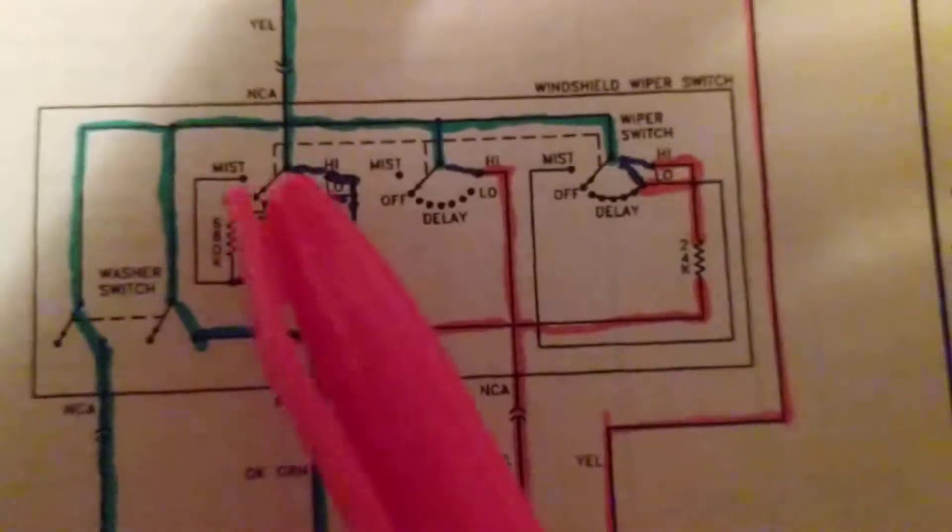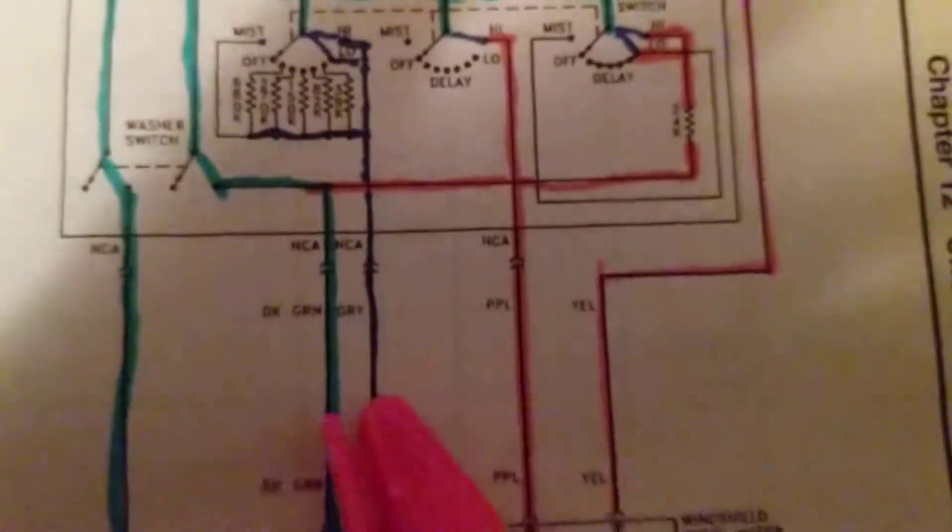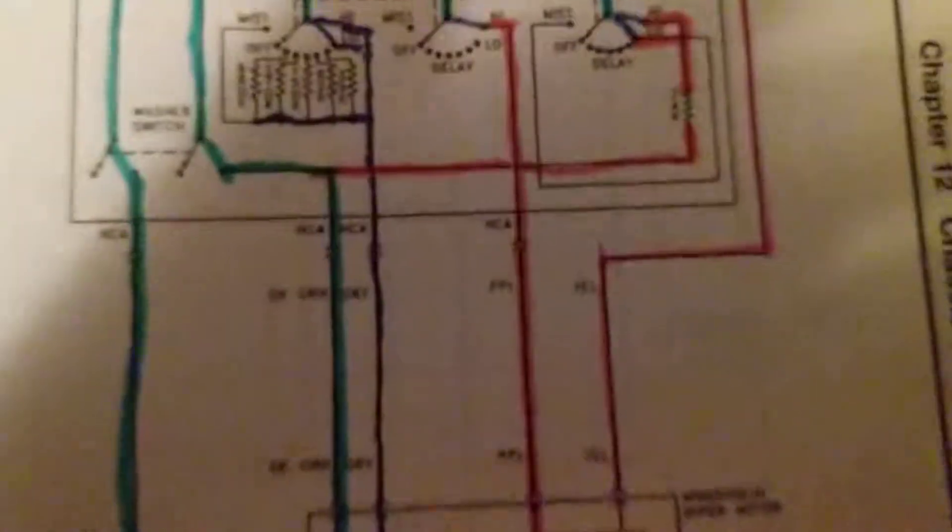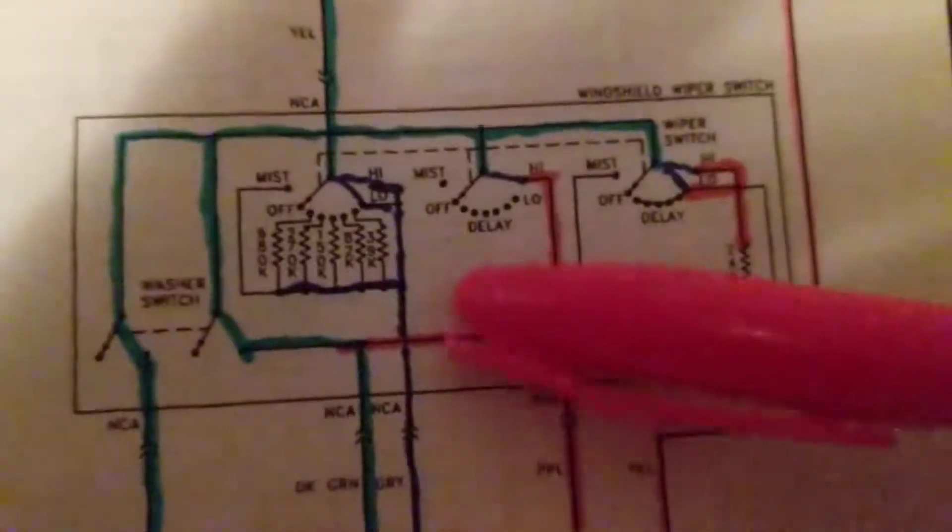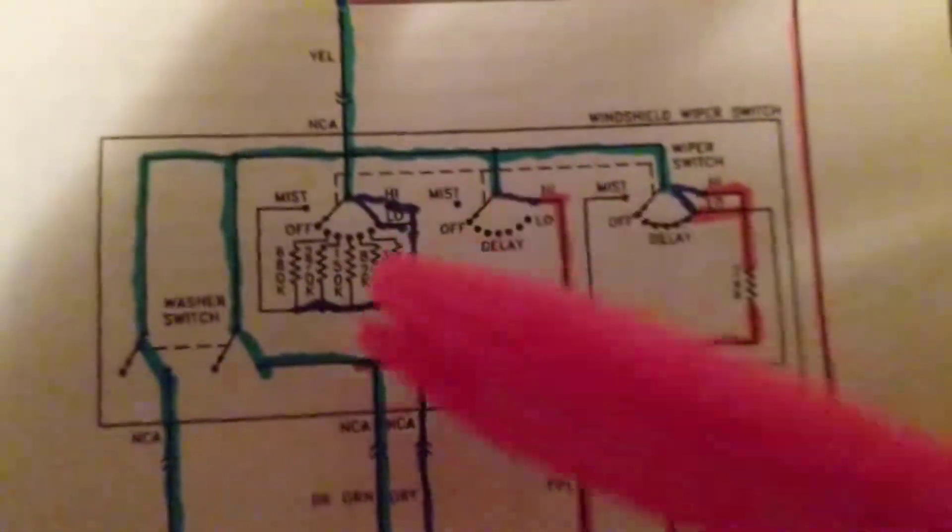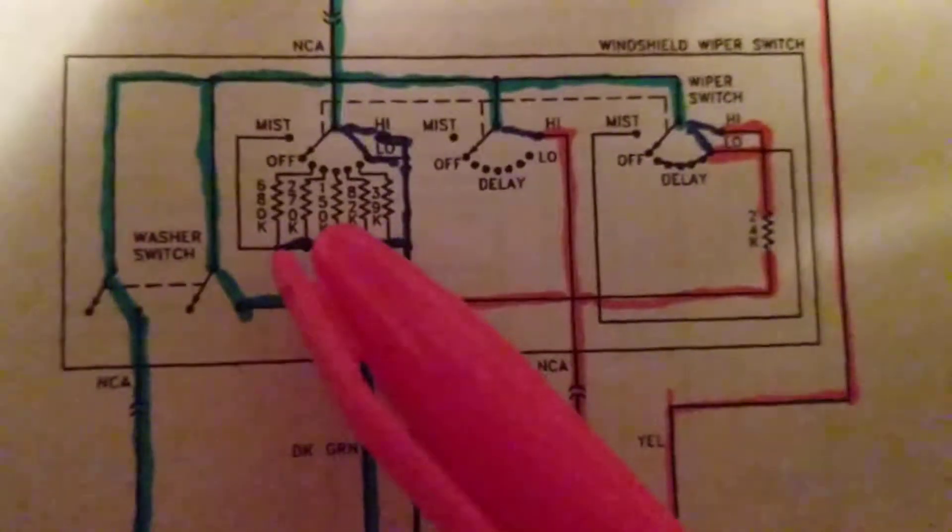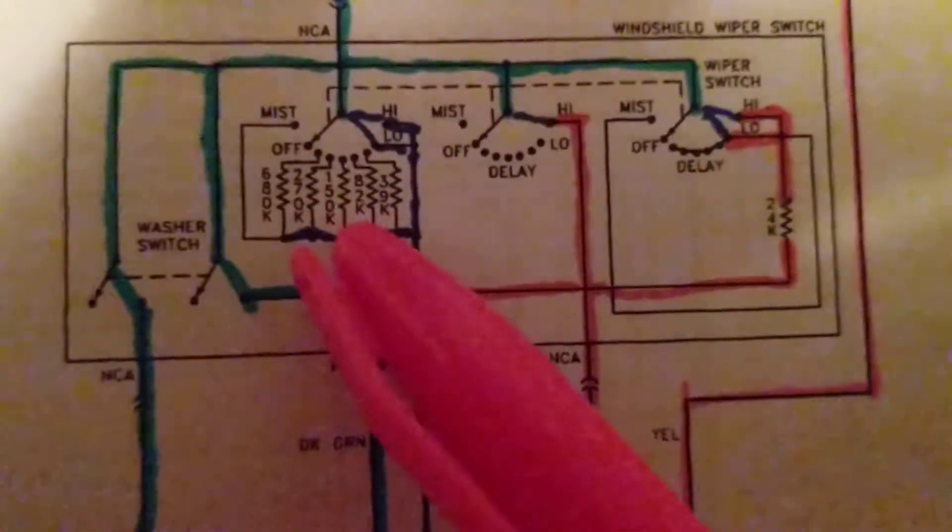When you have high speed over here, then you have the full voltage coming over here to the motor. And if you put on a midway speed, whatever that is, you might be on the resistor 150k or 82k.